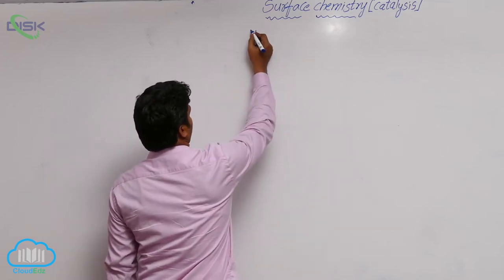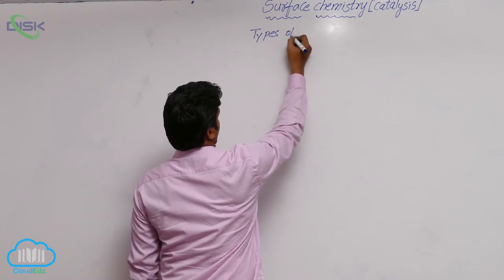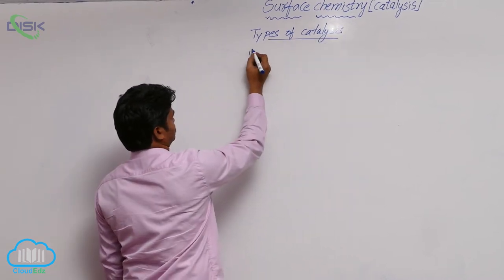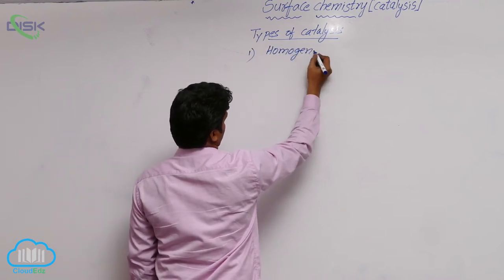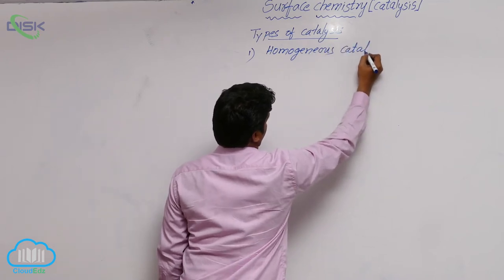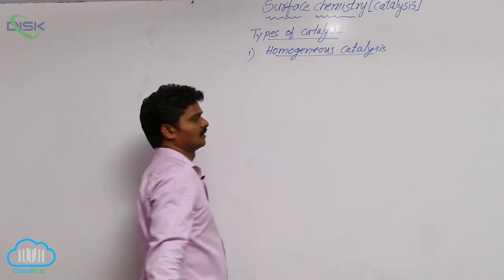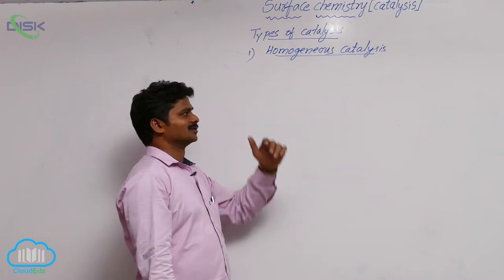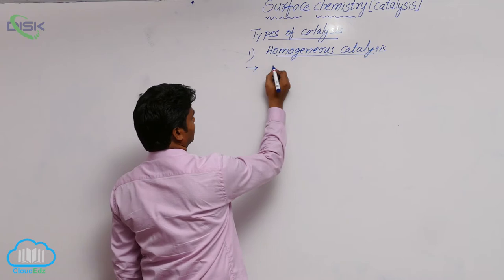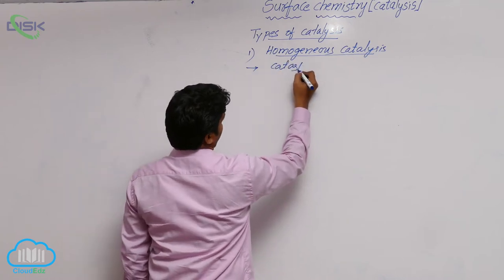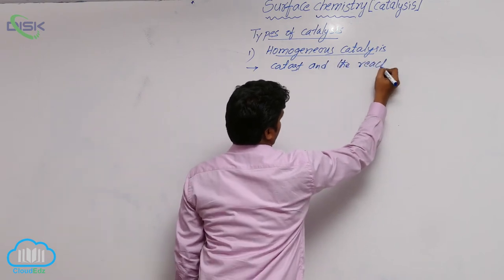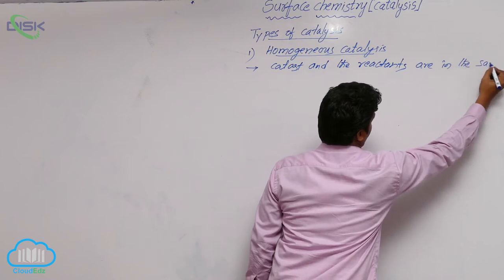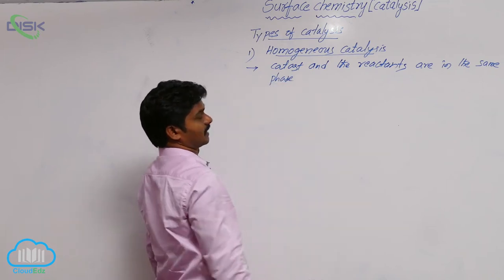I am going to explain types of catalysis. First one, homogeneous catalysis. If catalyst used and the reactants are in the same phase, that is said to be homogeneous catalysis. In this, catalyst and the reactants are in the same phase.